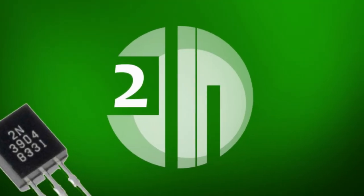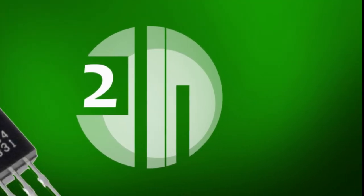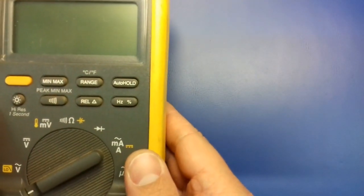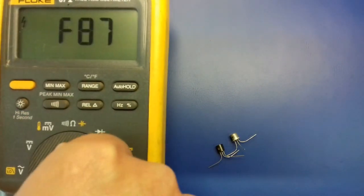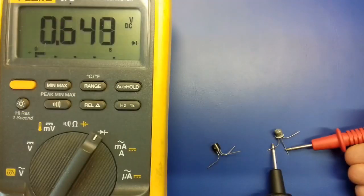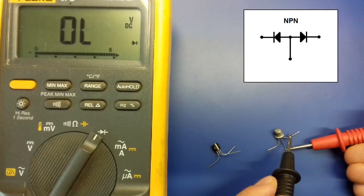The second method is using the diode function of a multimeter. You will have to set the multimeter to this diode function. For testing the NPN transistor, place the positive lead on the base.